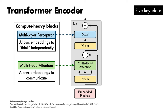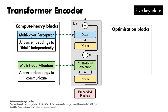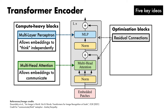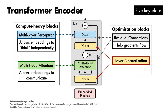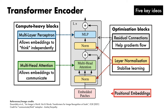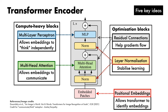The two compute-heavy blocks are where pretty much all of the floating-point horsepower goes. We also have residual connections, which help gradients flow, and layer normalization, which aims to stabilize learning — each appears twice. Outside the encoder itself, we also add positional embeddings to the embedded patches at the input, which helps the transformer identify which patch embedding comes from which location.